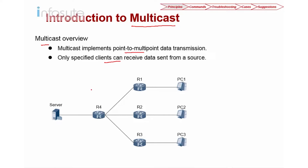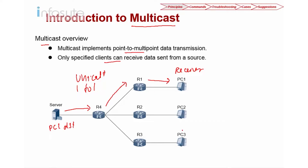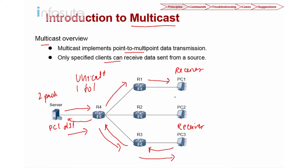Before we start on multicast, let's look at what unicast is first. Unicast is 1-to-1. If a server has a receiver that wants to receive a packet, the server sends it to R4 as the gateway, and R4 looks up the routing table and forwards the packet to PC1. If PC3 also wants to receive data, it sends a request through R3 to R4, and the server sends another packet. So if I have two receivers, I need two packets; if I have three receivers, I need three packets.